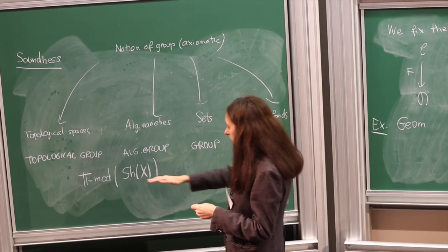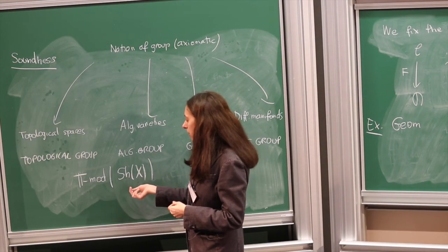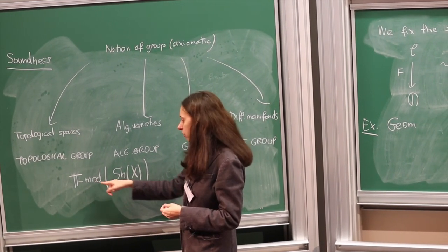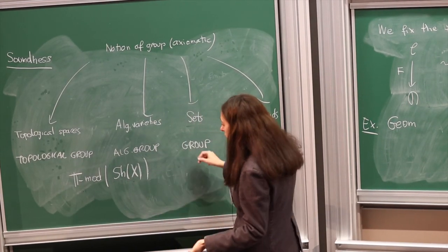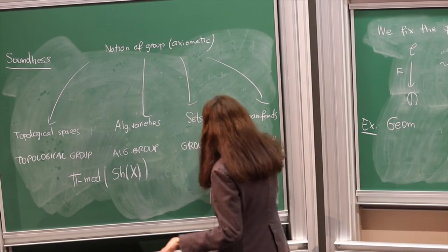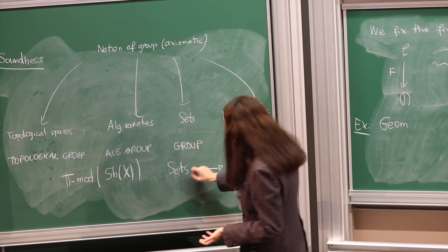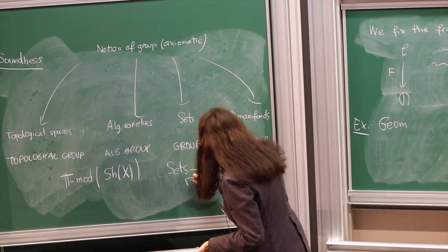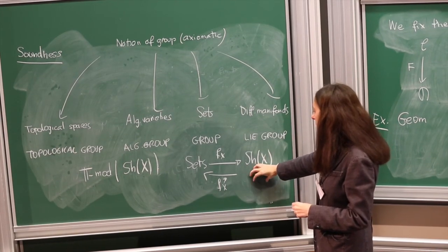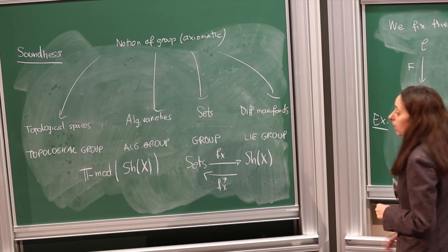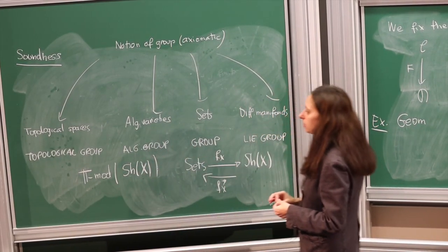There is a reason for Grothendieck's approach: by considering sheaves of sets you get a topos, and if you want to recover sheaves of rings you just take a model of the theory of rings inside that topos. This works not just for algebraic theories like rings, but also for sheaves of local rings — you consider models of the theory of local rings inside your topos of sheaves, and the stalks will be local rings.